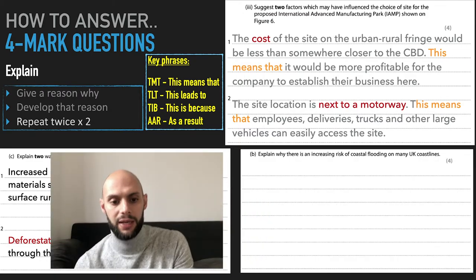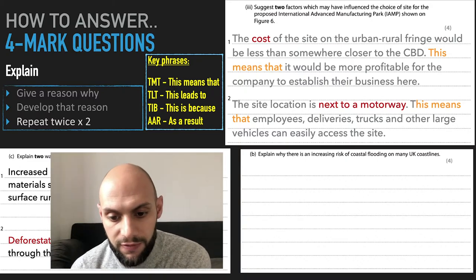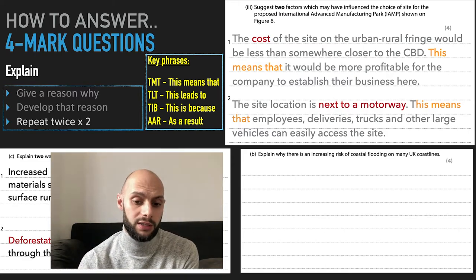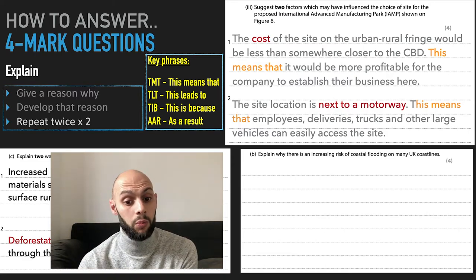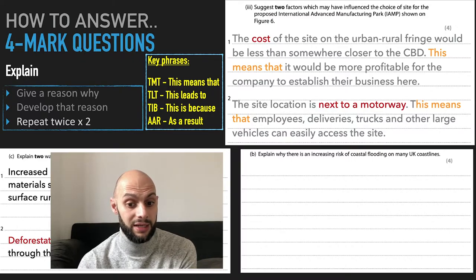Let's look at one more explain four marker. Explain why there is an increase in risk of coastal flooding on many UK coastlines. This is four marks, but it doesn't ask you to explain one reason or one way there is an increase in risk. It just asks you explain why there is an increase in risk of coastal flooding on many UK coastlines.